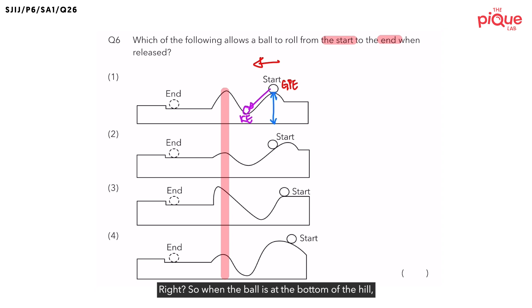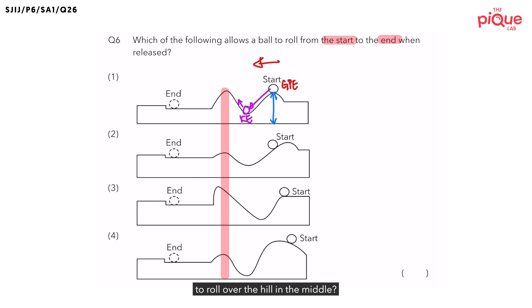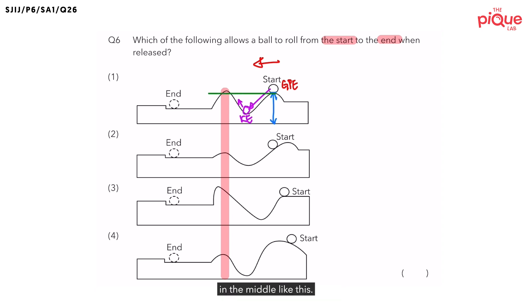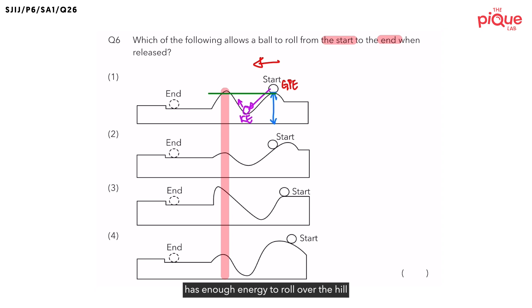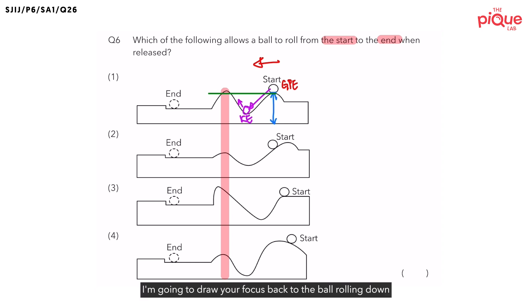When the ball is at the bottom of the hill, it will naturally roll back up. The question is, will the ball have enough energy to roll over the hill in the middle? In order to answer this, take out a ruler and a pencil and draw a line from the base of the ball at the starting point across the hill in the middle. You will realize that the hill is slightly taller than the ball's starting point. We need to discuss whether the ball has enough energy to roll over a hill that is higher than its starting point.